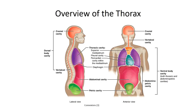The thorax is the barrel-shaped cavity forming the upper portion of the torso. It is continuous superiorly with the neck at the level of the first ribs, which outline an oval boundary between the two regions known as the thoracic inlet. Inferiorly, the diaphragm forms a distinct muscular boundary separating the thoracic and abdominal cavity. This plane of separation created by the diaphragm is also known as the thoracic outlet.